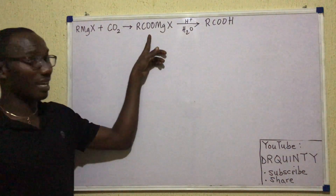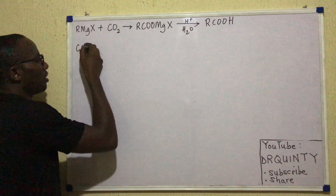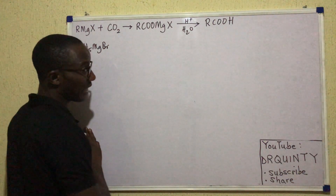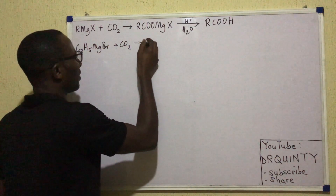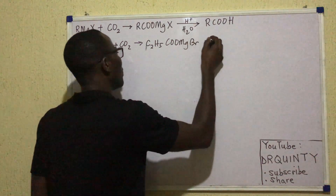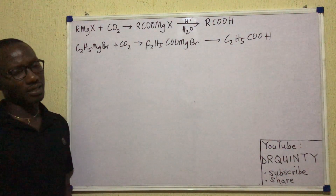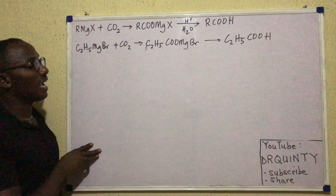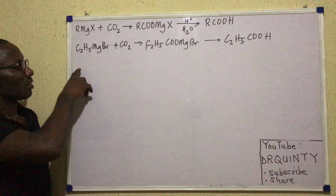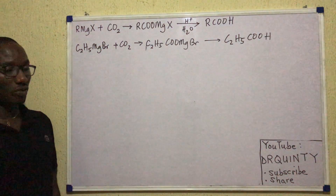So from RMgX we add CO₂ first to get RCOO⁻, which eventually becomes RCOOH. Under exam conditions, if given C₂H₅MgBr as the Grignard reagent and asked what carboxylic acid we get by carbonation, the initial product is C₂H₅COOMgBr, and on hydrolysis we get C₂H₅COOH — that's propanoic acid. Note that the final product is one carbon longer than the initial Grignard reagent.